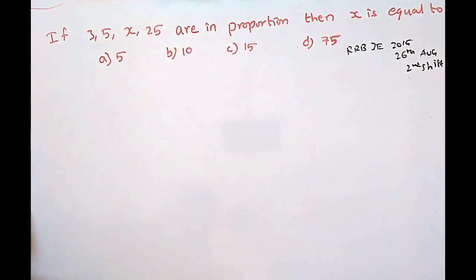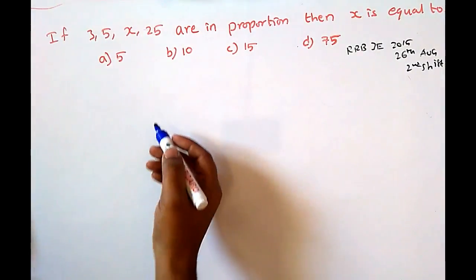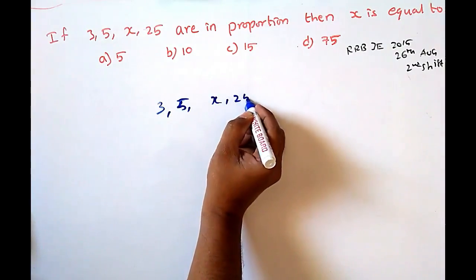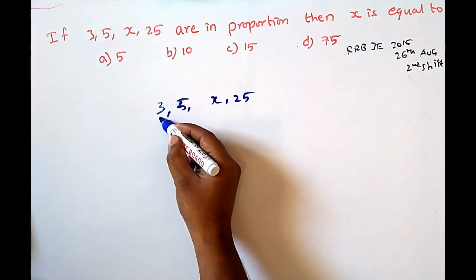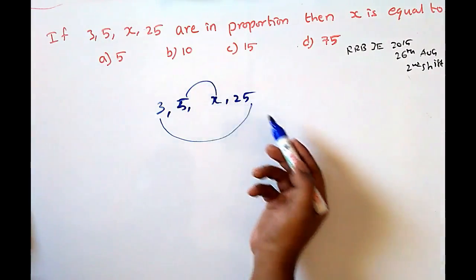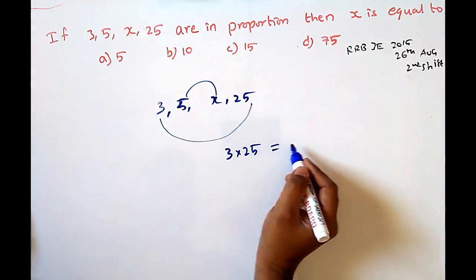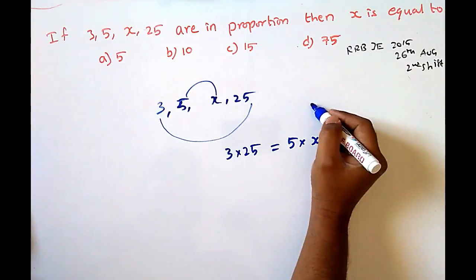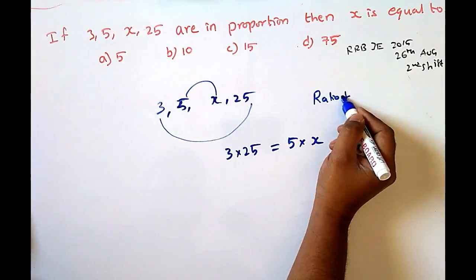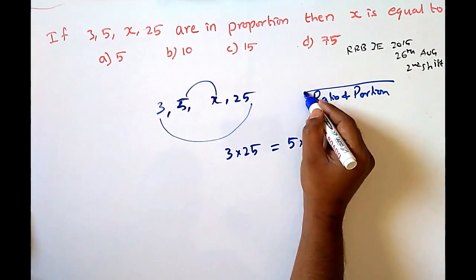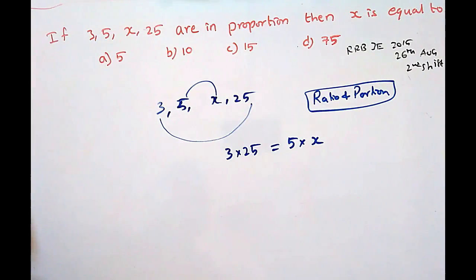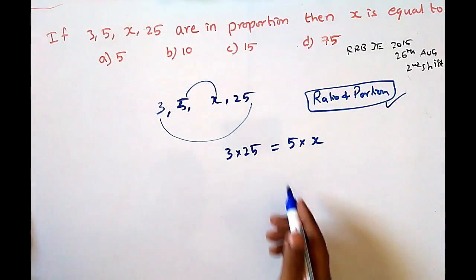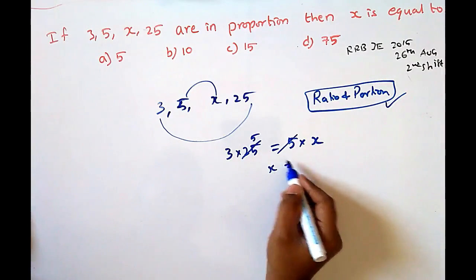If 3, 5, x, 25 are in proportion, then x equals what? If four numbers are in proportion, then the product of extremes equals the product of means. So 3 × 25 = 5 × x, giving 75 = 5x, therefore x = 15. If you want to know more properties, you can go to ratios and proportions which I have already explained — the theory part is in the channel playlist. So x = 15.